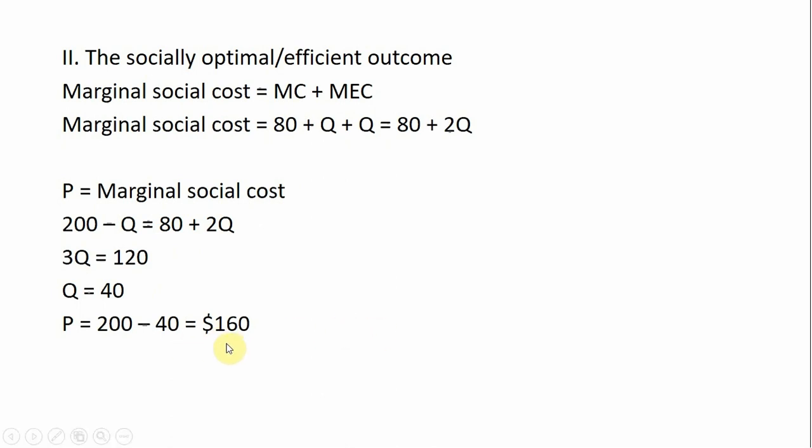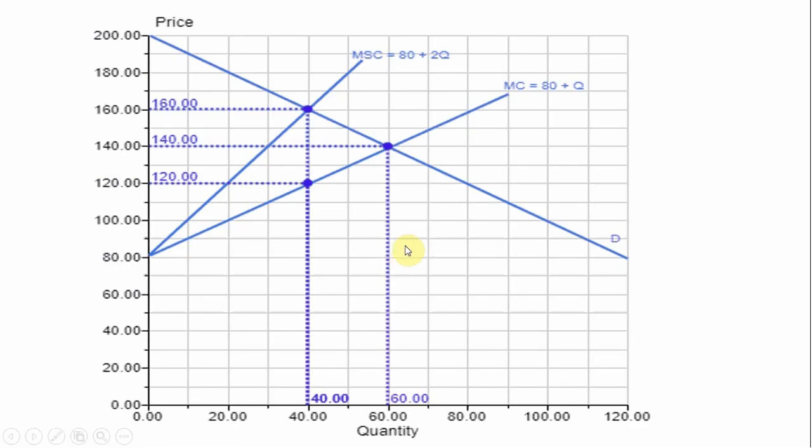Let's take a look at this graphically. On the graph here, we have our demand equation, which is given by 200 minus Q. We have our marginal cost equation or the private marginal cost. In case one, we found where supply intersects demand or where price equals marginal cost. So the quantity was 60 and the price was 140. Again, we argued that this was not an efficient outcome.